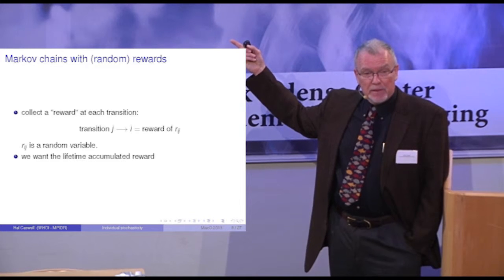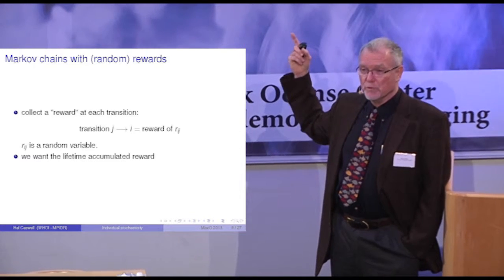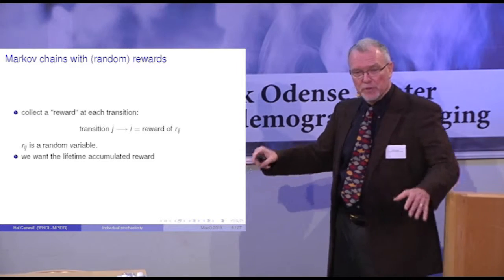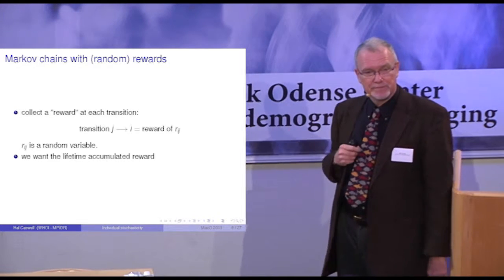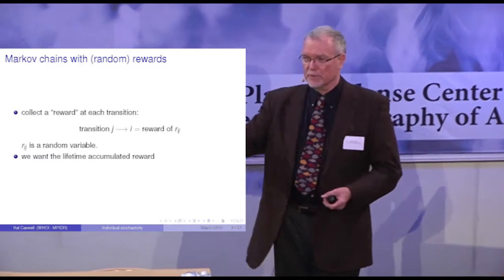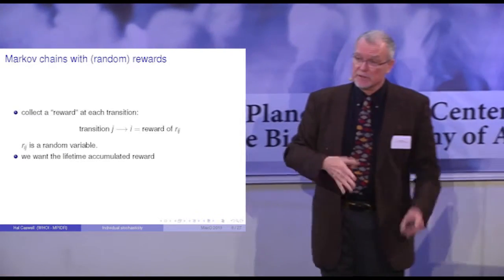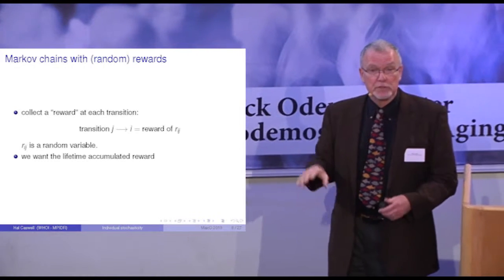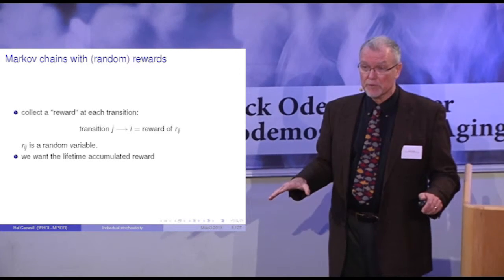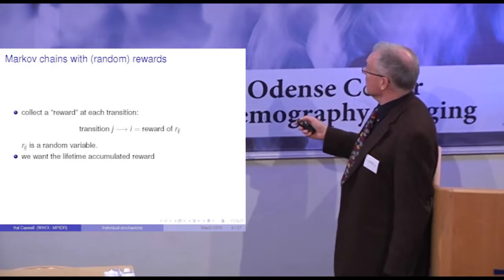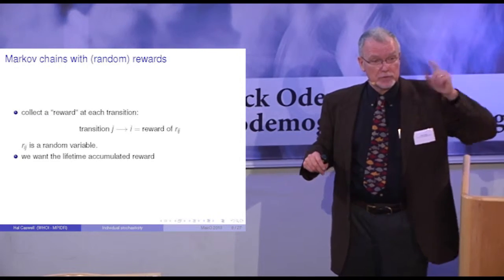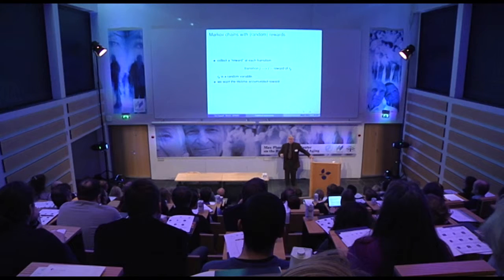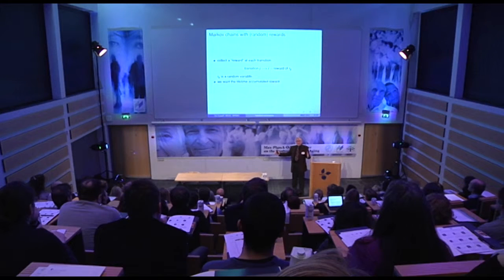Now I want to add a piece: I want to make this a Markov chain with rewards. Imagine an individual moving among these stages — every time you make a move, you collect a reward. Move from this stage, you collect a reward; move to a different stage, you collect a reward; stay in that stage, you collect a reward. The reward depends on what move you make, it's a random variable, and what we're interested in is the lifetime accumulated reward. Some individuals will die soon and not get very much; some will live a long time and get a lot, producing variation in these lifetime accumulations.